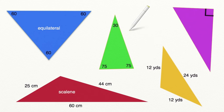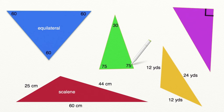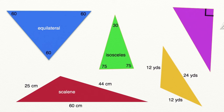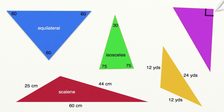Let's look at our green triangle. We have two angles that have the same measurement, which means we must have two sides that have the same length. That means that this must be an isosceles triangle. Let's take a look at this purple triangle. We have a square in the corner of this triangle, which means that this angle must represent 90 degrees, and this must be a right triangle.